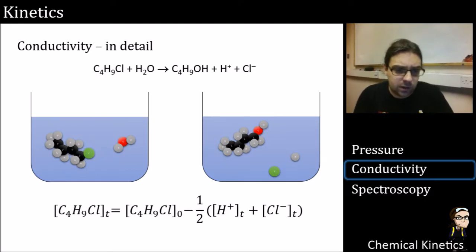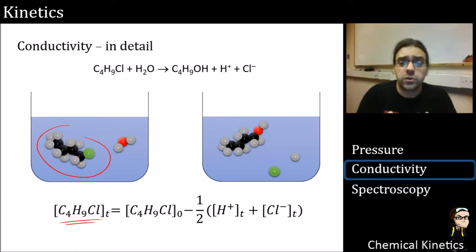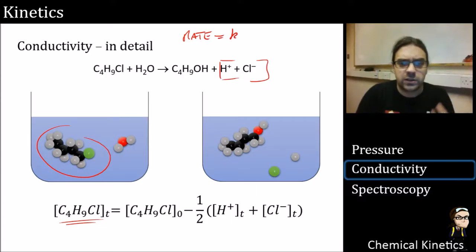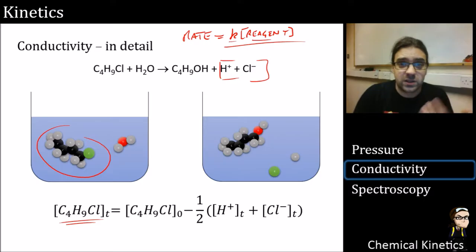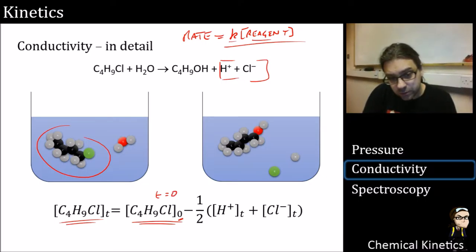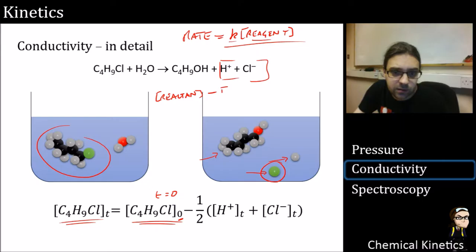We need to figure out the concentration of the reactant. We want a rate based on that, but the trouble is conductivity is measuring the products. The rate constant always multiplies a reagent — you can't stick a product in and get a rate out. But we can work it out: we just take the starting concentration at time zero and subtract what it has turned into. It breaks apart into ions, so if we take the reactant and subtract the Cl⁻ from it, we get the reactant concentration at time T.